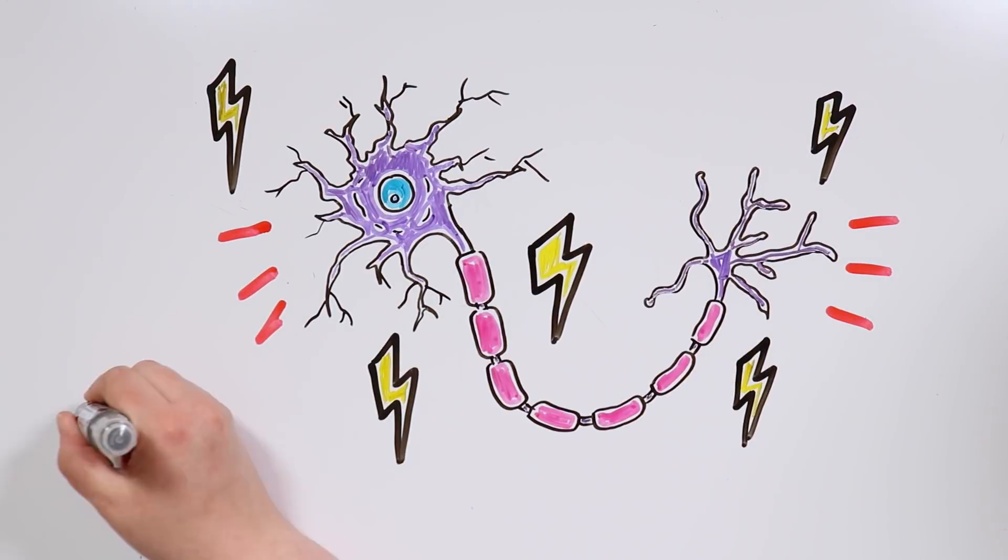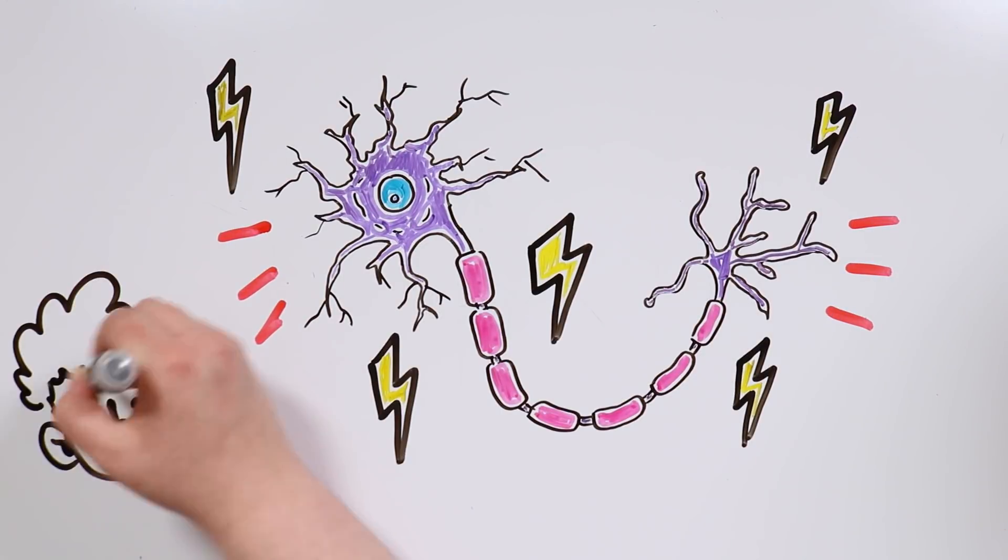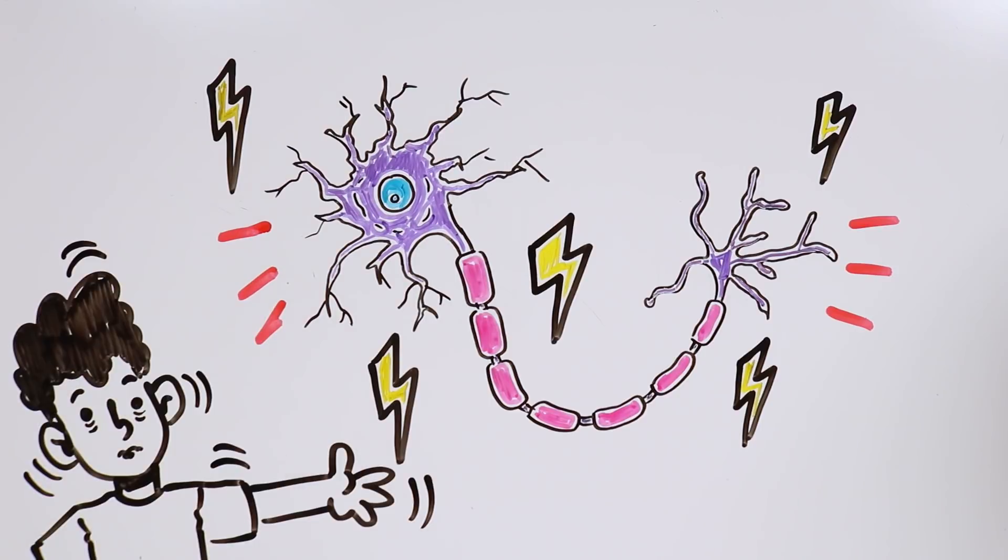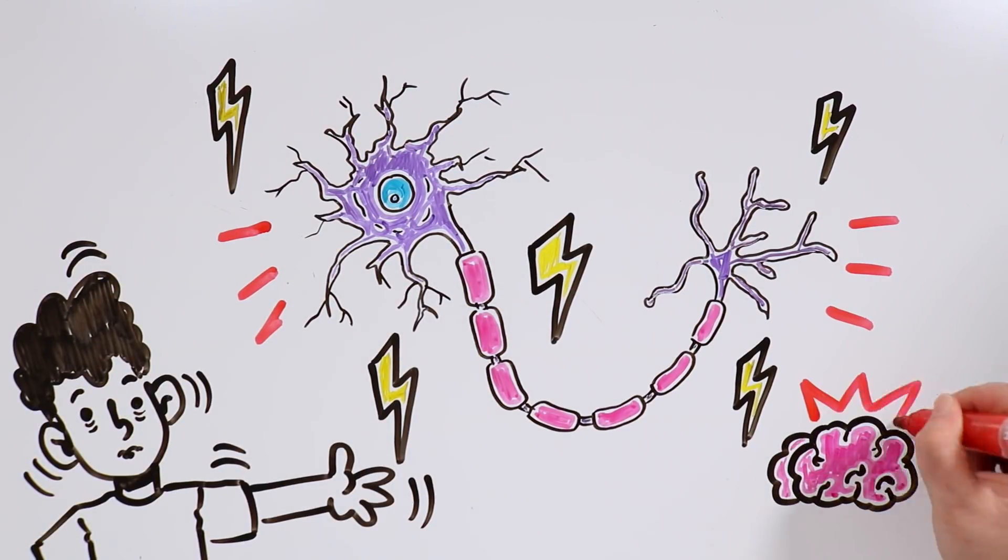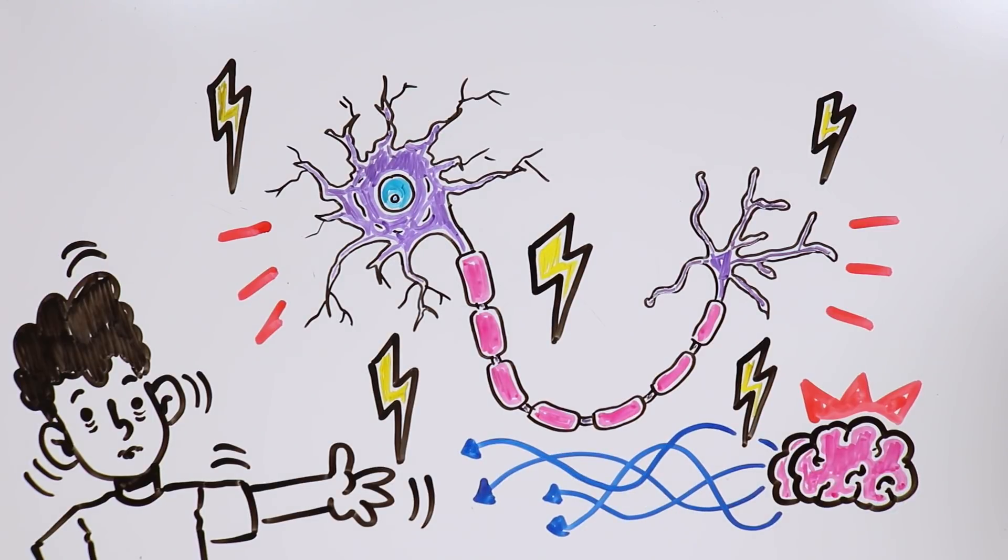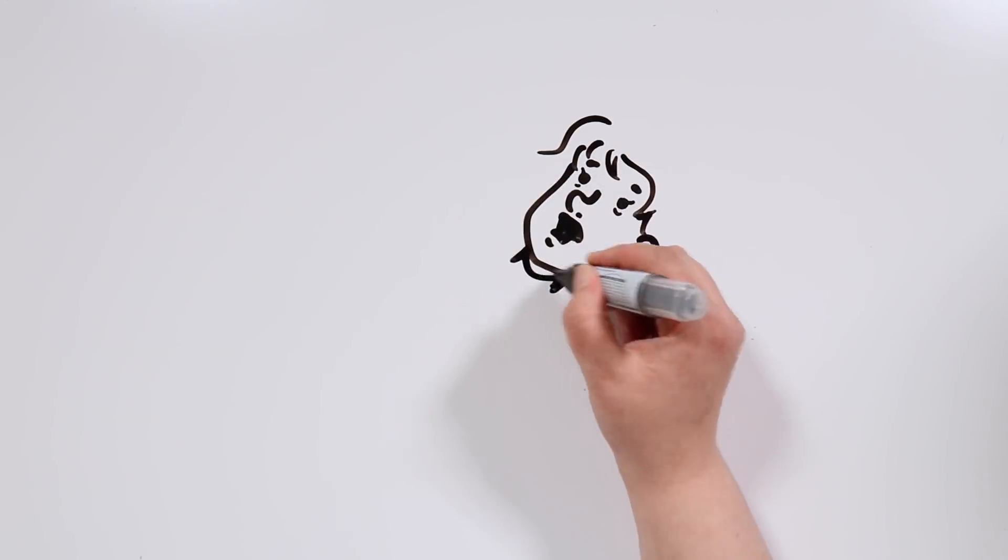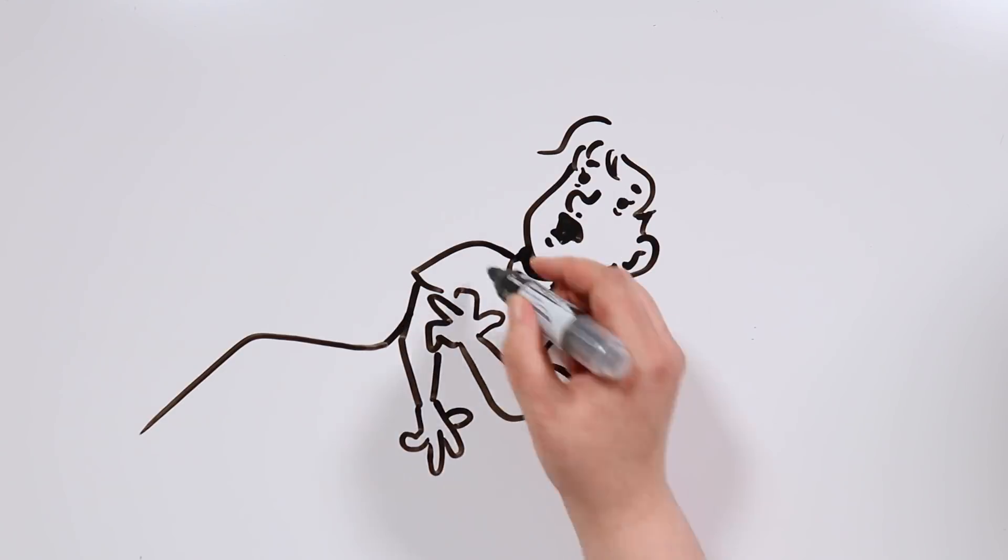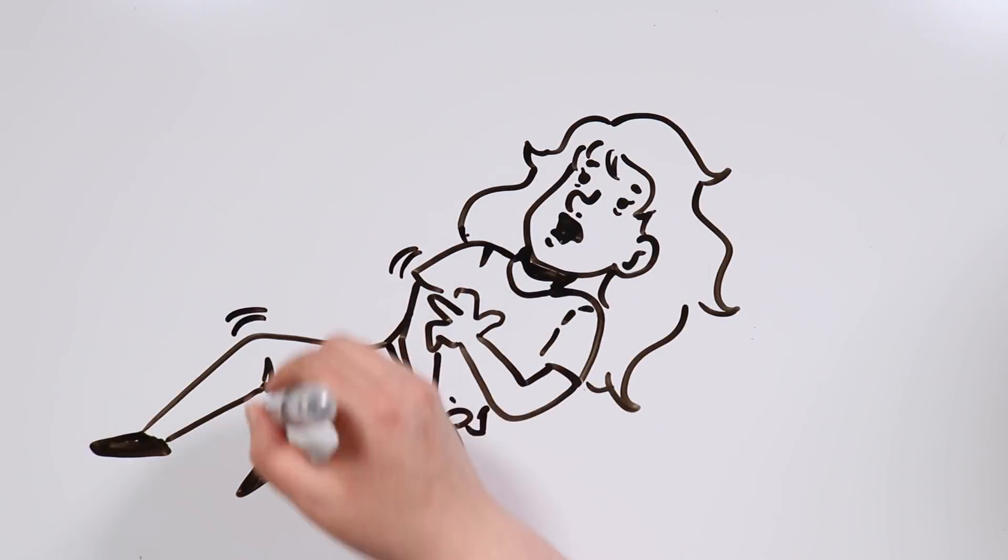That abnormal electrical activity in the brain can make the person have convulsions or involuntary repetitive movements. This is because in that case, the brain will be sending wrong orders all over the body. And in case you don't know, convulsions are quick, erratic and violent tremors experienced by the body.